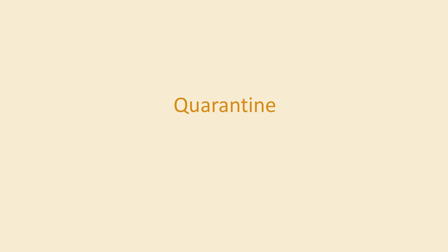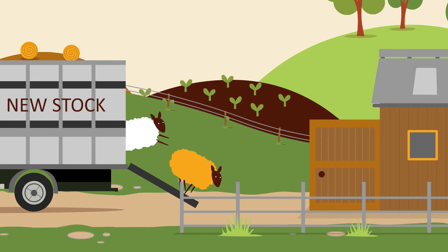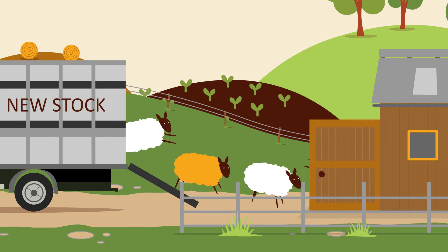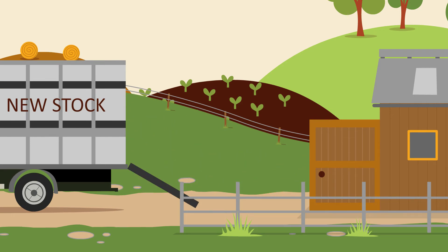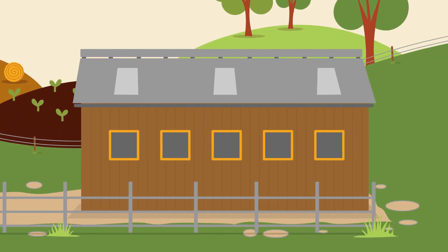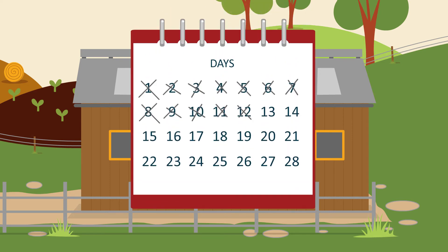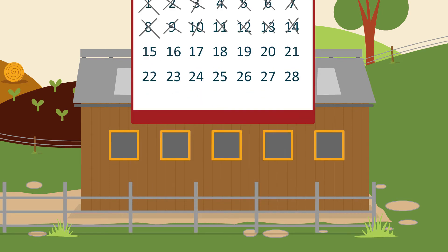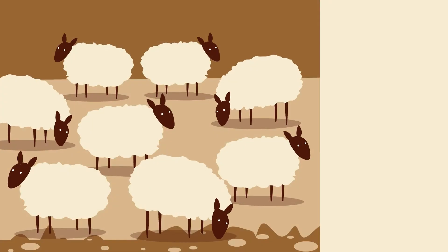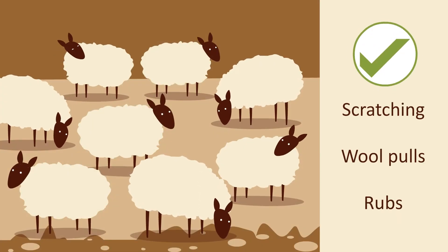Always keep introduced animals isolated and ensure best practice quarantine conditions, ideally in a building well away from other animals. Quarantine advice for sheep scab is to treat with an approved product effective against sheep scab mites and isolate them for at least two weeks. During this time, observe the quarantine sheep for any scratching, wool pools or rubs.